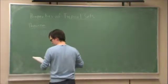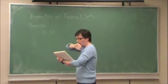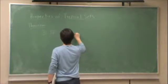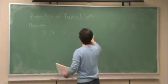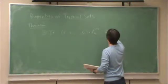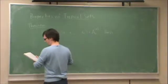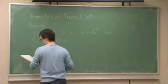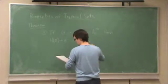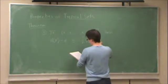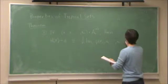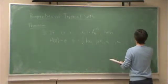First part. If the sequence is in the Typical Set, then we write that like so. Then, the following is true. h(X) minus epsilon is less than or equal to negative one over n log p of x1, x2, and so on up to xn, is less than or equal to h(X) plus epsilon.